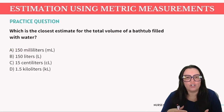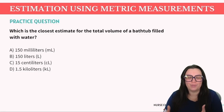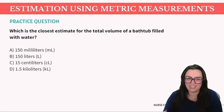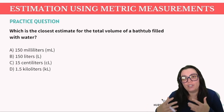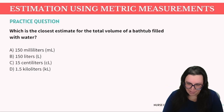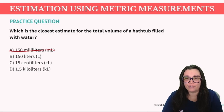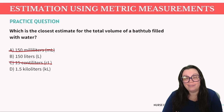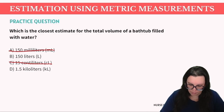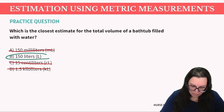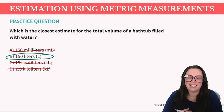Our last question: which is the closest estimate for the total volume of a bathtub filled with water? Is it A, 150 milliliters; B, 150 liters; C, 15 centiliters; or D, 1.5 kiloliters? A bathtub has to contain way more than 150 milliliters, and 15 centiliters isn't going to cut it, so we eliminate A and C. And 1.5 kiloliters would be excessively more than a bathtub — remember, one kiloliter is equal to the amount of water in a swimming pool — so we eliminate D. Therefore B, 150 liters, is the correct answer.